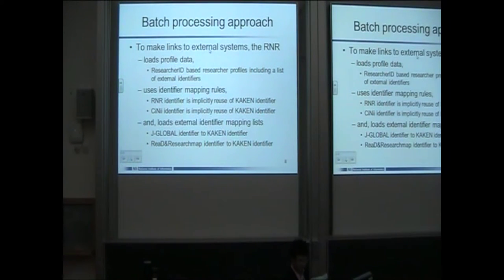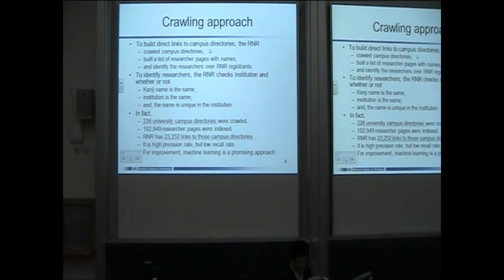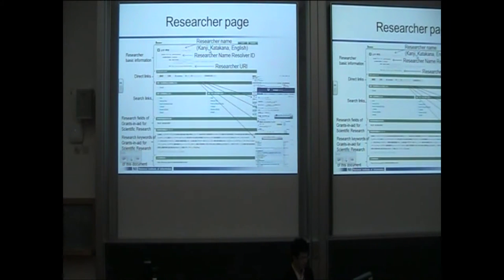One approach is the batch process approach to make links to external systems. We load the profile data and the mapping list using implicit mapping units. In the following approach, we crawl university directories and build a list of research pages with names, then identify researchers over our system registrants.